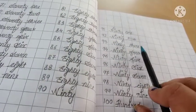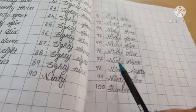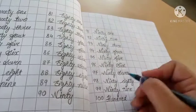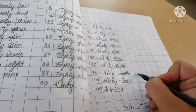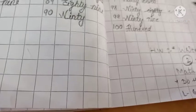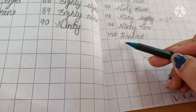91, 92, 93, 94, 95, 96, 97, sorry 98 will come here. 98, 99, and 100. 100's spelling you have to learn. H-U-N-D-R-E-D, hundred. Okay.